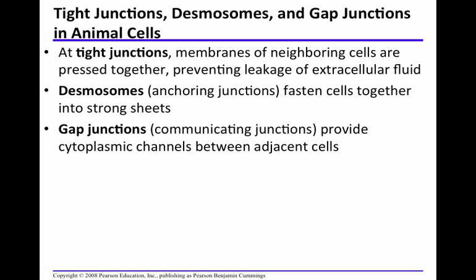Now let's look at tight junctions, desmosomes, and gap junctions found in animal cells. Tight junctions press the adjacent membranes of neighboring cells tightly together — like glue — preventing leakage of extracellular fluid from one cell to the other. Desmosomes are anchoring junctions that fasten cells together into strong sheets, anchoring them so they form a strong bond. There can be communication between desmosomes and gap junctions, but not tight junctions.